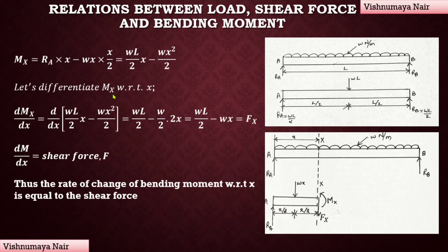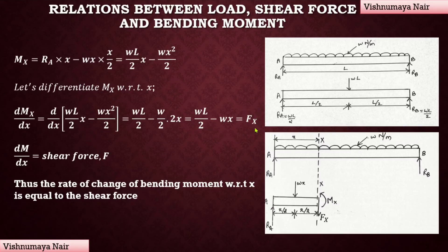Differentiating Mx with respect to x: dMx/dx equals d/dx of (WL/2·x minus Wx²/2), which equals WL/2 minus W/2·(2x), giving WL/2 minus WX. You can see that this equals Fx, the shear force. Therefore, the rate of change of bending moment with respect to x is equal to the shear force.